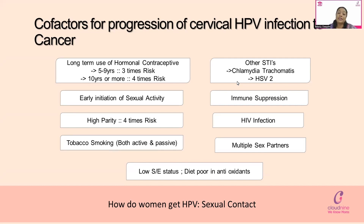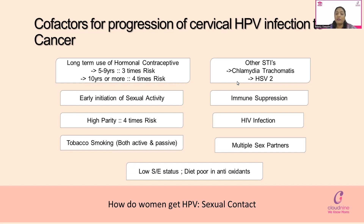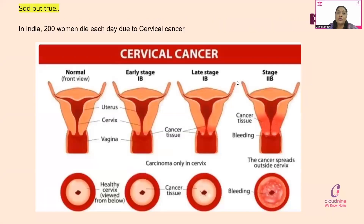Additional co-factors include tobacco smoking — both active and passive — multiple sex partners, and low socioeconomic status. Low socioeconomic status is a risk factor because diet is poor in antioxidants. However, the main reason women get HPV is through sexual contact. All these factors cause the progression of HPV infection more quickly to cancer.